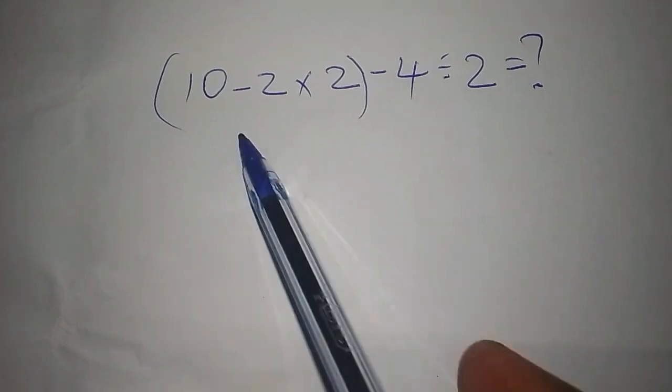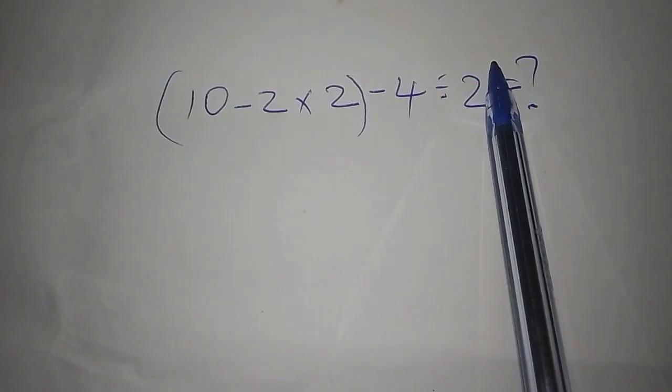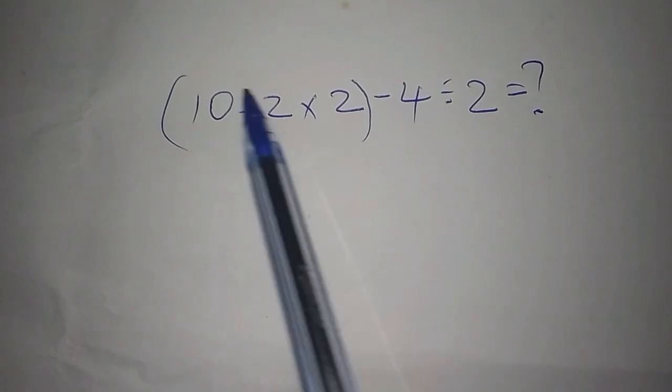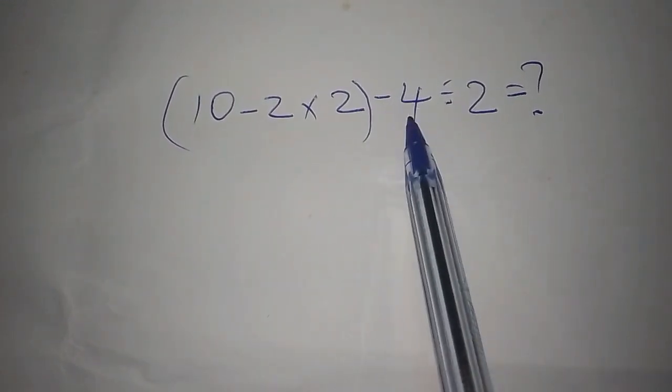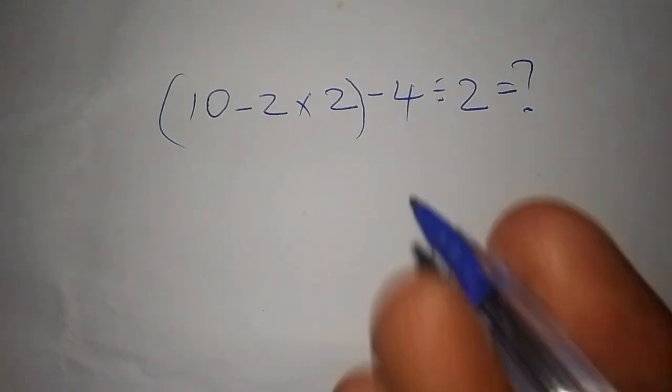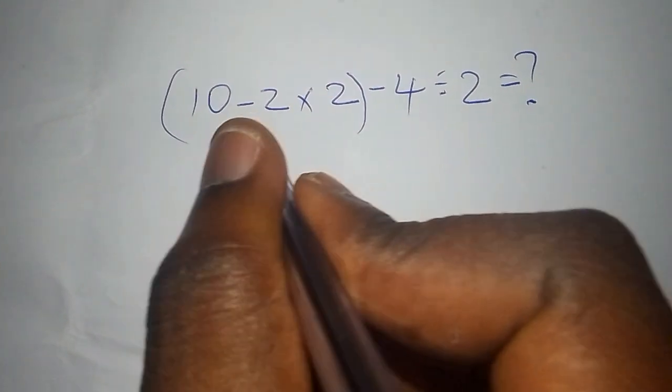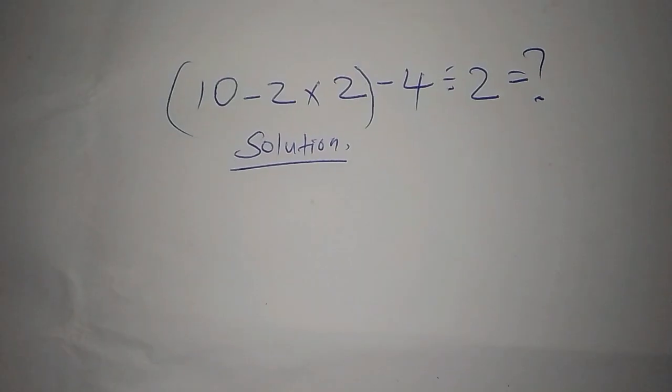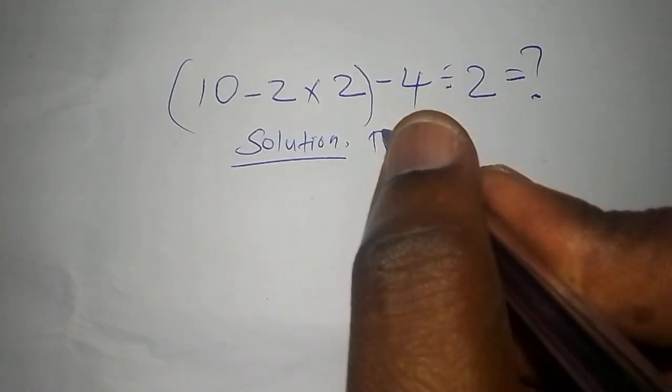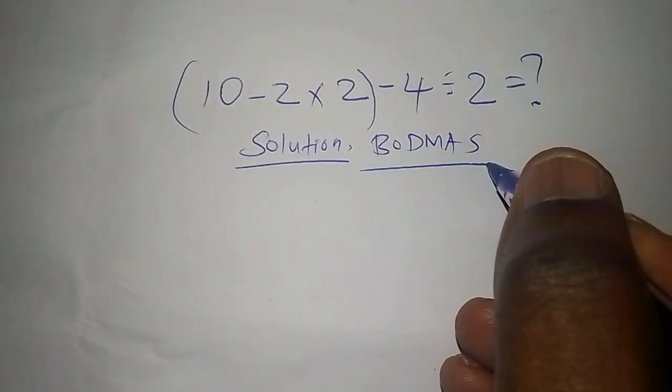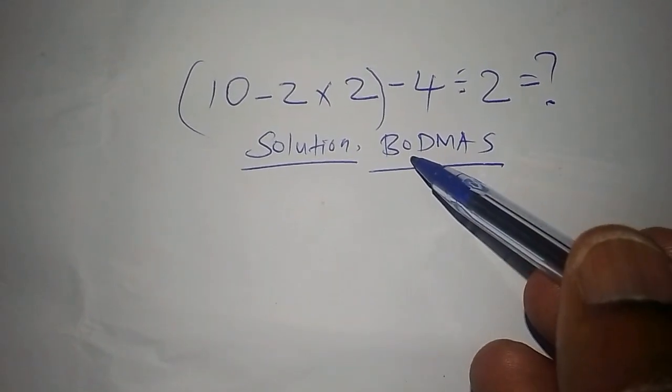Hello everyone, I hope you're well. I want us to work out this math problem: (10 - 2 × 2) - 4 ÷ 2. We're going to start with the solution. There's one thing I want us to consider, and that is BODMAS. BODMAS stands for: B for bracket, O for of, D for division, M for multiplication, A for addition, and S for subtraction.